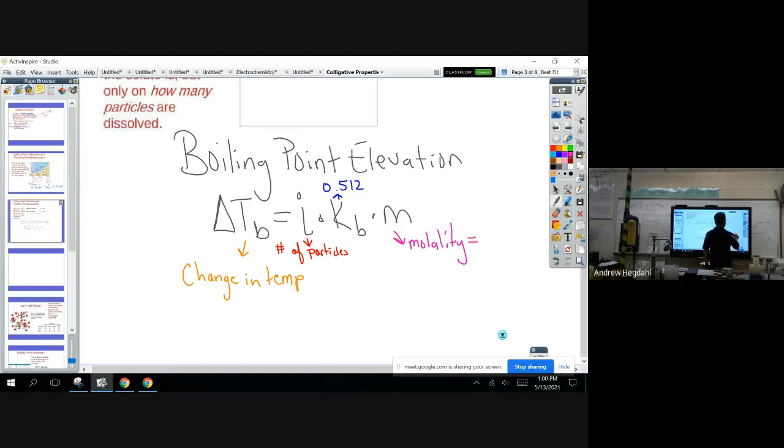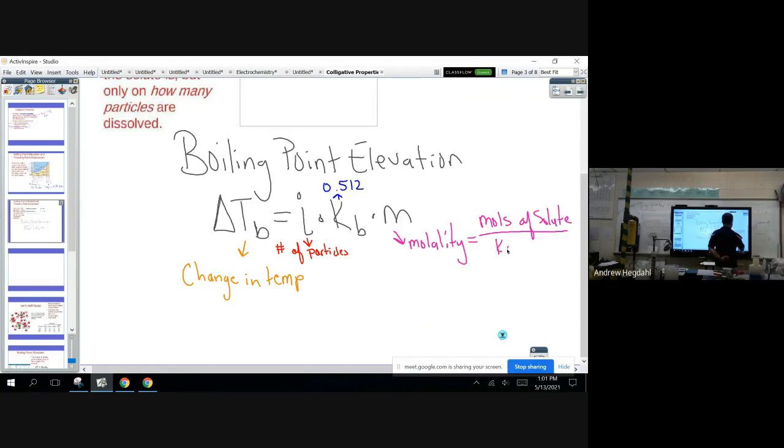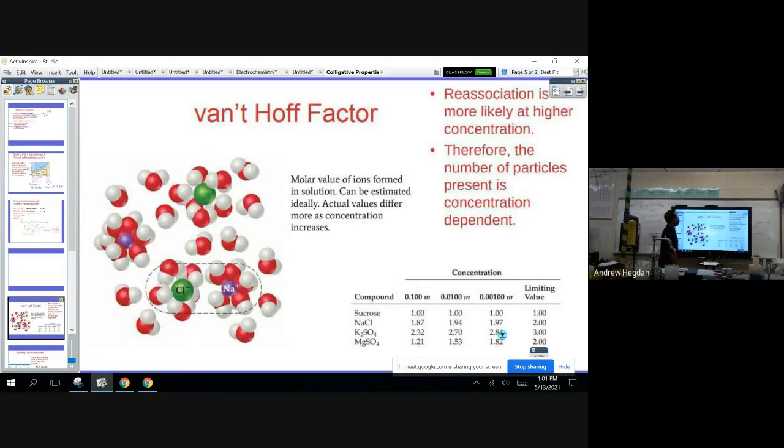Molality is equal to the moles of the solute, so the thing that's being dissolved, divided by the mass of the water in kilograms - or kilograms of solvent, but we're only going to be working with water. So let's first talk about this - how do we figure out the number of particles? This is called the van't Hoff factor. It sounds more complicated than what it actually is. The van't Hoff factor just measures the number of particles that a substance dissolves into.